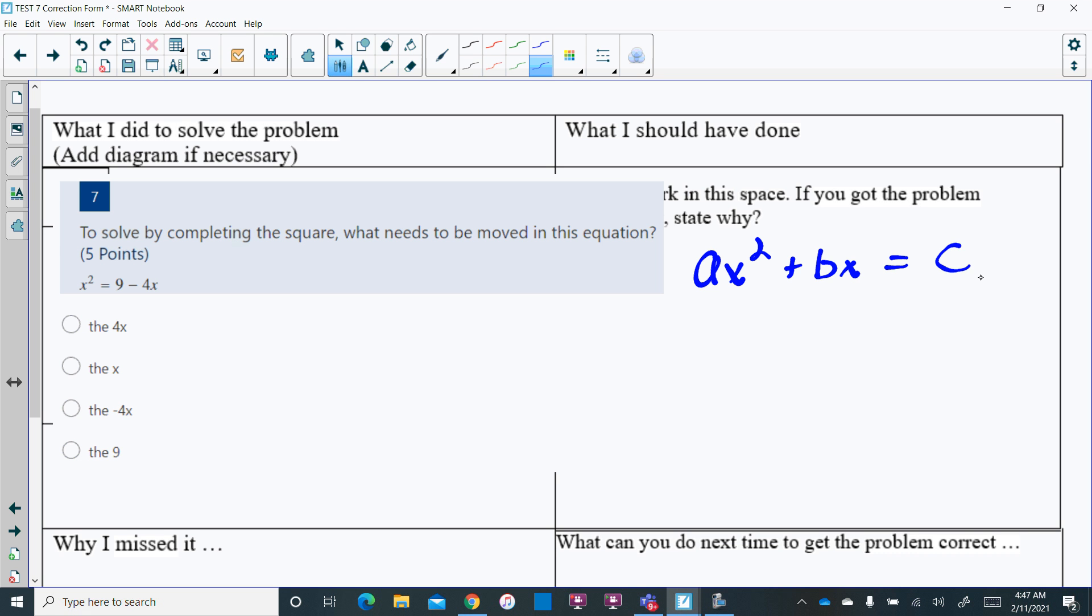Here, we already have the constant 9, that's fine, I need it to be over here. But what does not need to be over there with that 9 is that minus 4x. So what needed to occur was this minus 4x needed to move to the other side, so that we would have x squared plus 4x equals 9. So what needed to move was that minus 4x.